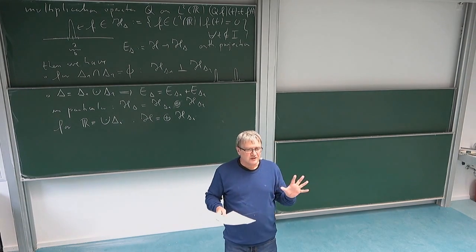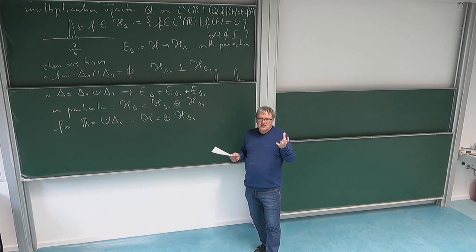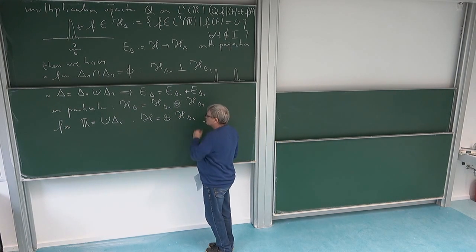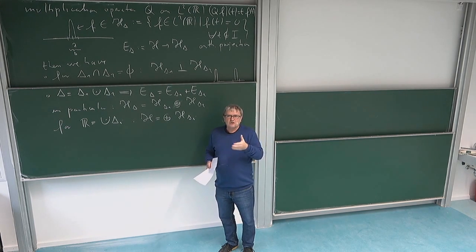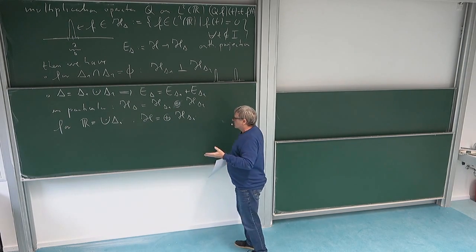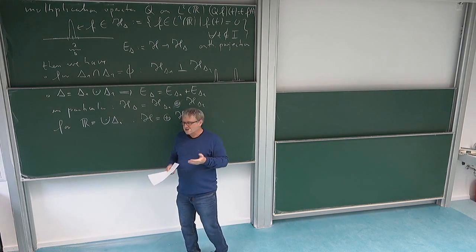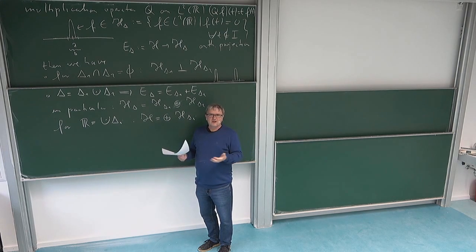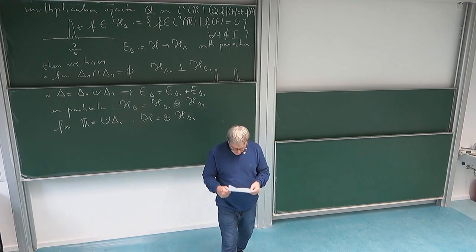We can decompose our Hilbert space into a direct sum of subspaces chosen as approximate eigenspaces. But unlike the finite-dimensional case — where there are finitely many smallest subspaces that cannot be made smaller — here there are no smallest components. We can make this decomposition finer and finer without limit.